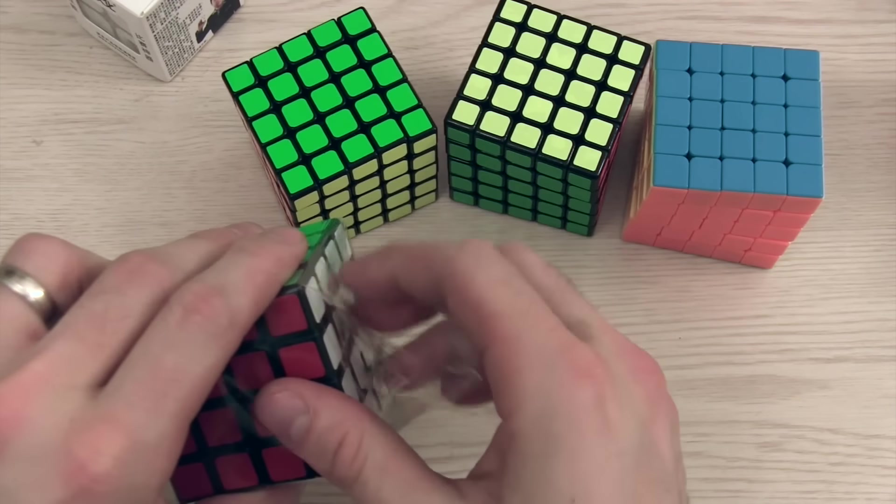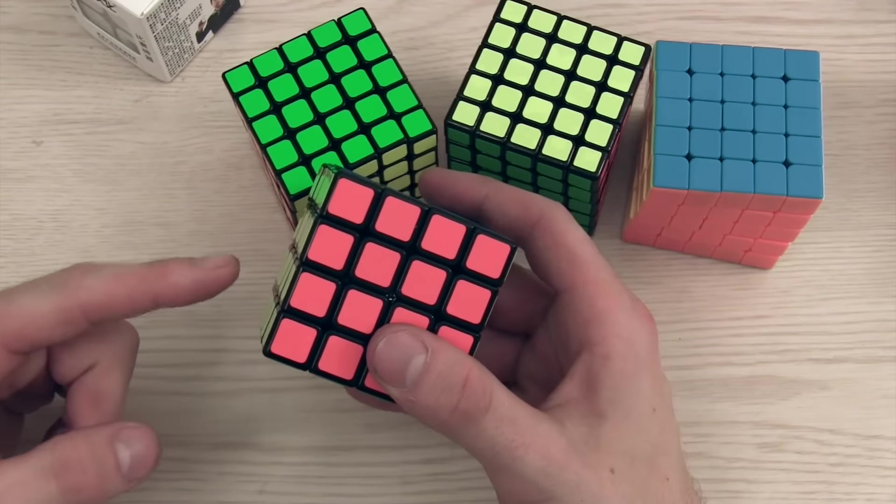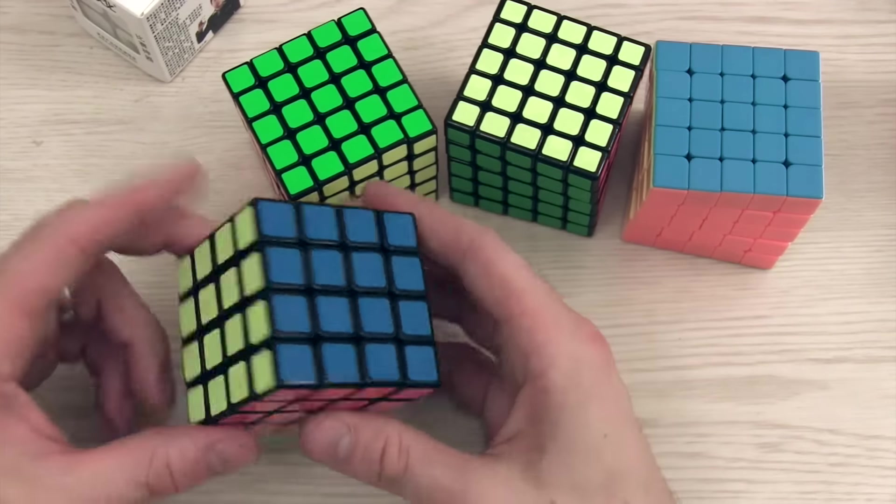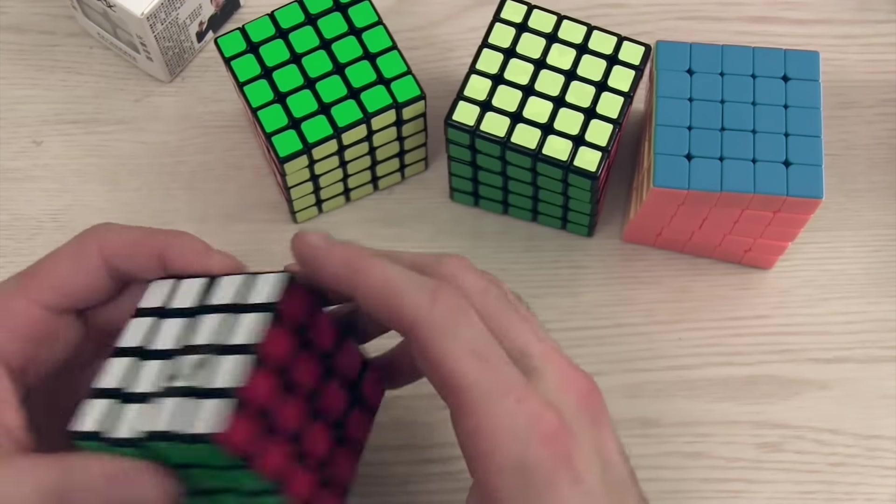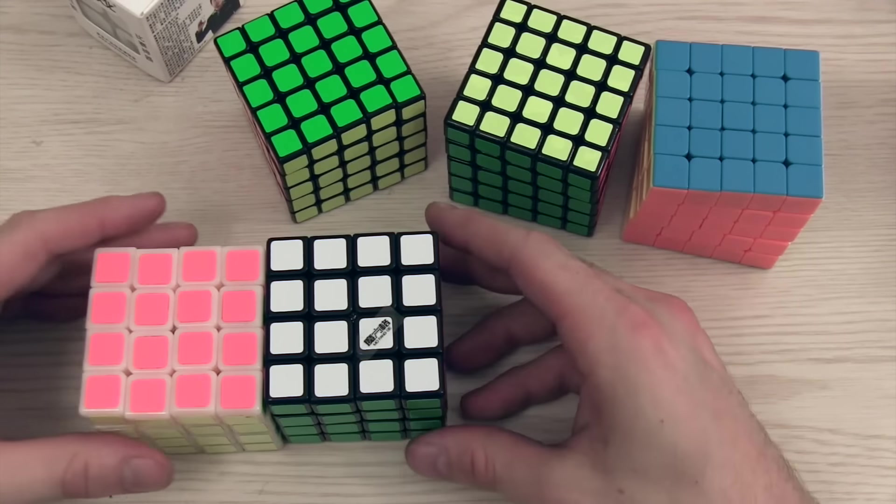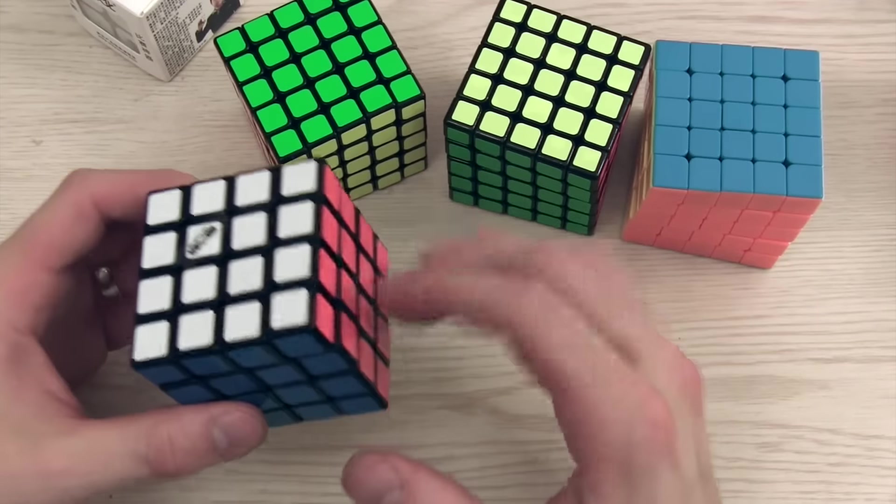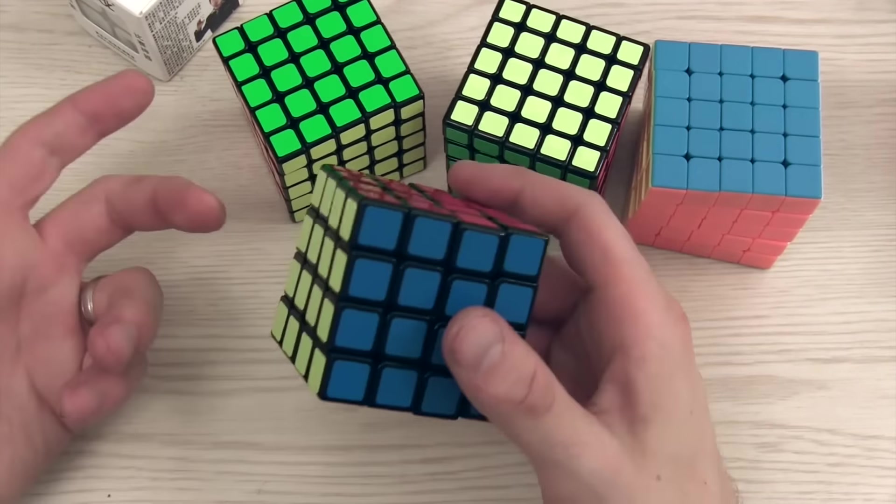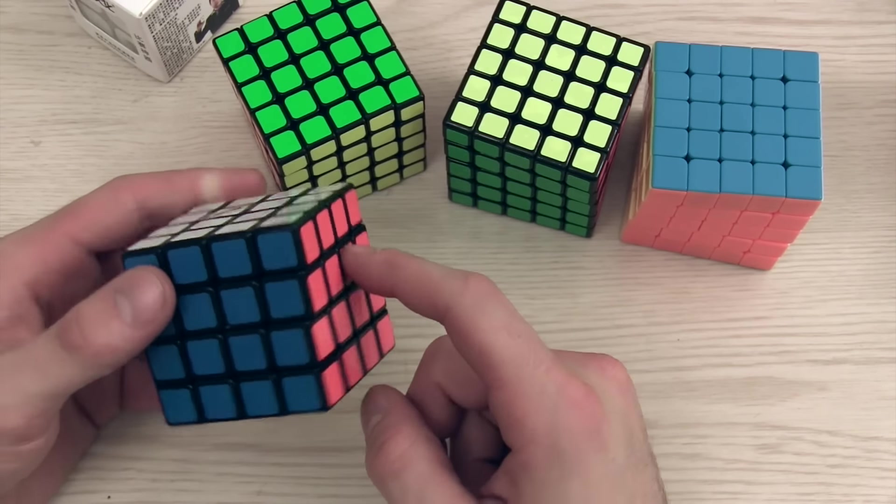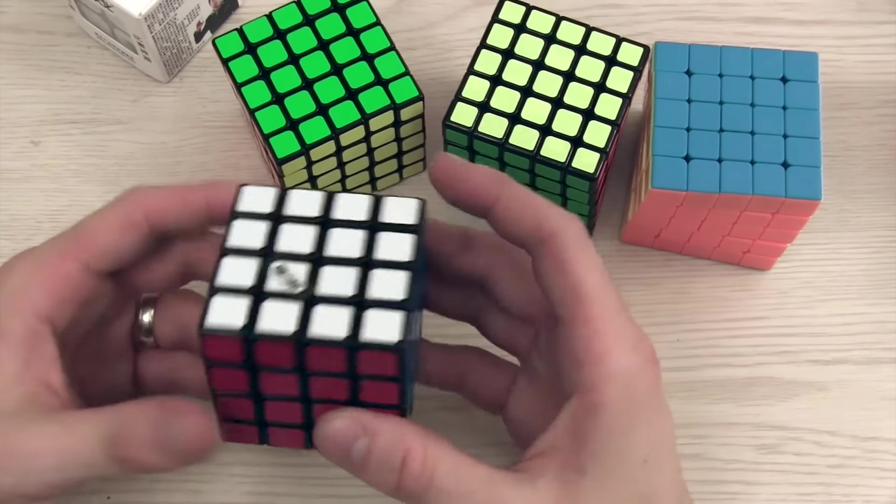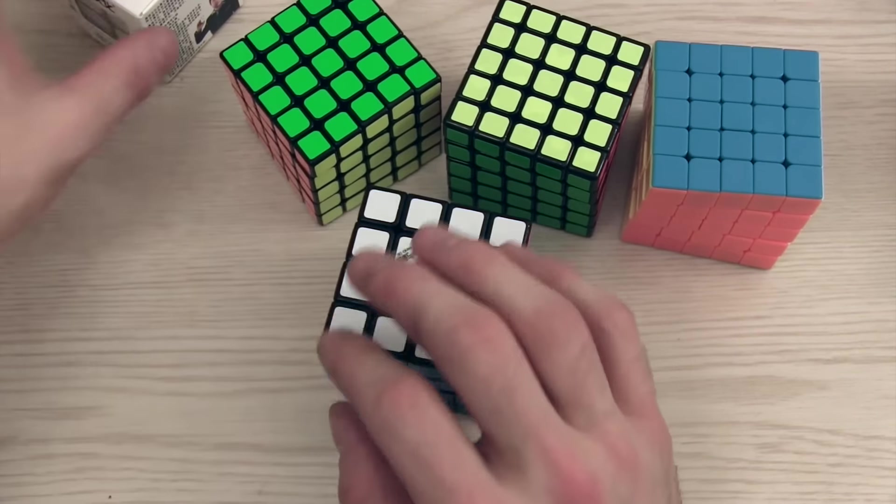Here we have the Qi Yi Storm. This is their latest one. I actually wanted to get stickerless but they were out of it and the day this shipped they got stickerless in. So too bad for me. This feels, is this 62mm? I believe so. That is definitely 62mm. Here's my Aosu. For just a quick mention of how this feels, it's nice. It's about $11. I don't see this replacing my Cyclone Boys G4 or my Aosu. But I'm going to break it in and see how this feels. I'm going to have to figure out what I can do to set this up.